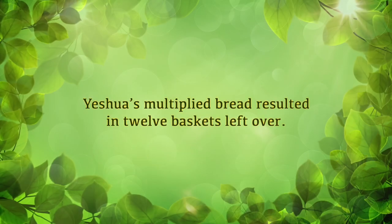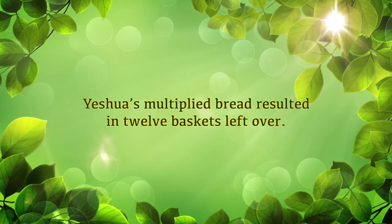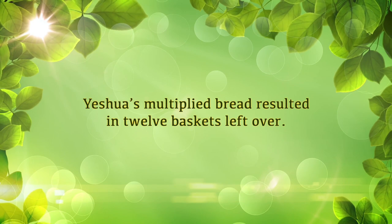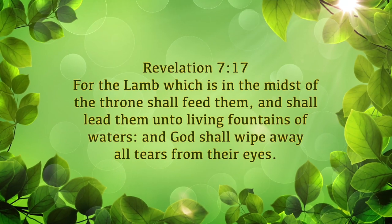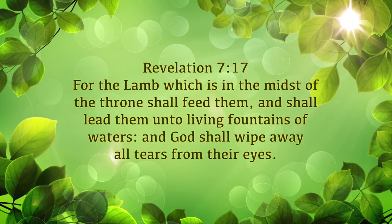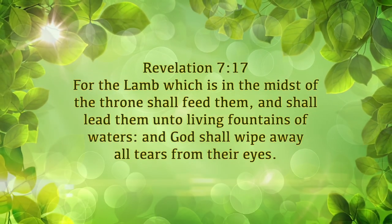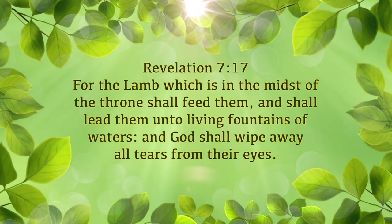There was one particular time when Yeshua had this habit of multiplying bread and fish. In one of those instances, he was able to multiply bread and he had 12 baskets left over. If you think of what John saw with the 12 different kinds of fruit coming from the tree of life — because the 12 tribes are supposed to be priests and light to the nations — it makes sense why in that particular miracle he would have wanted the 12 disciples to see those 12 baskets of fruit or bread left over. Because Revelation 7:17 says, 'For the Lamb, which is in the midst of the throne, shall feed them and shall lead them unto living fountains of waters. And God shall wipe away all tears from their eyes.'